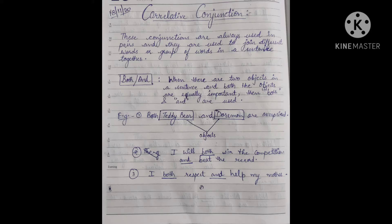These two words 'both' and 'and' are always used together. Whenever 'both' and 'and' appear together in a sentence, they serve to join the complete sentence. When there are two objects in a sentence and both objects are equally important, then 'both...and' are used.